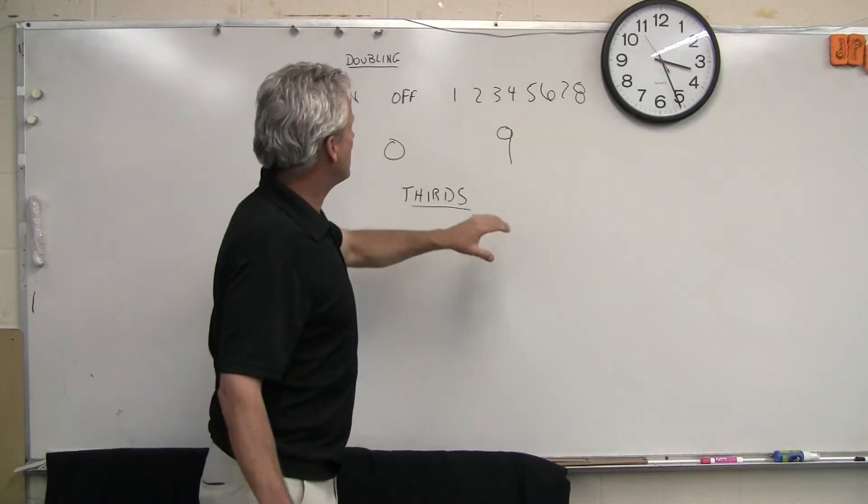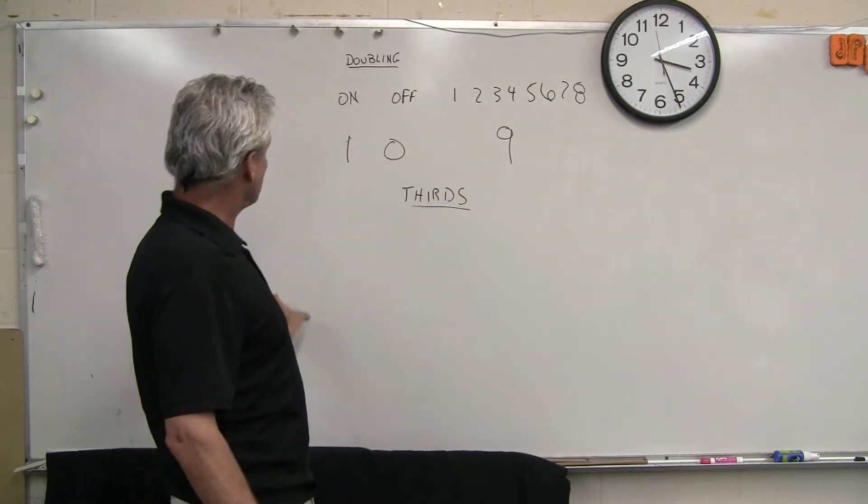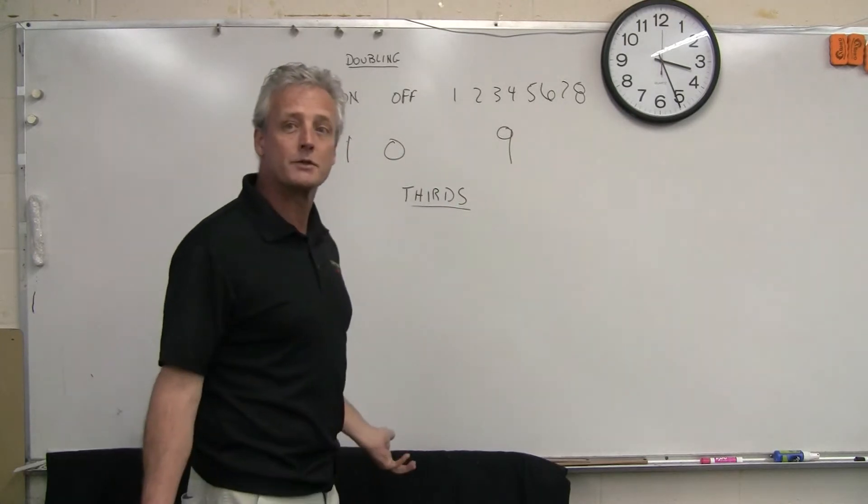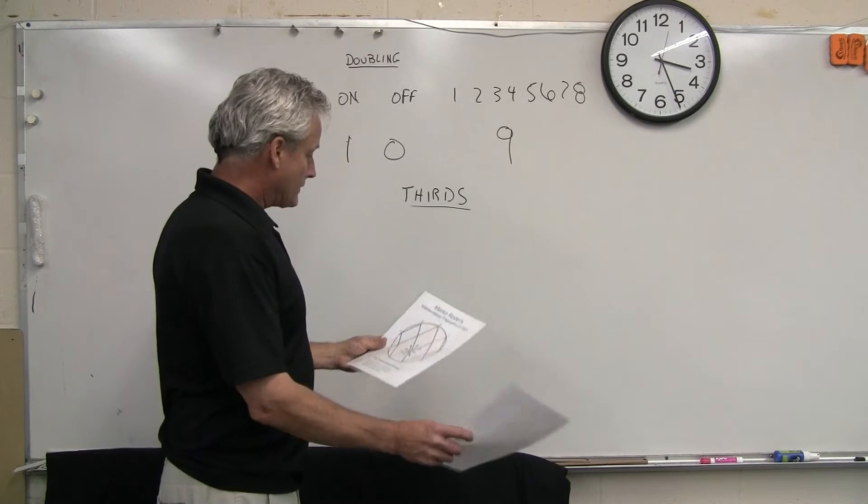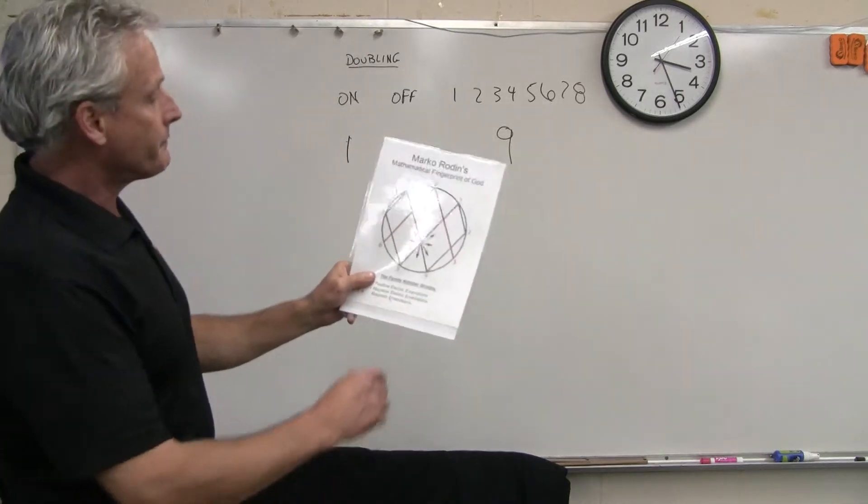So using the one through nine numbers, we're looking at the thirds, right? Remember the thirds that go across the top. We've got the doubling and the thirds on the most harmonic numbers chart. So that doubling and the thirds in Marco Roden's work, it represents the doubling.